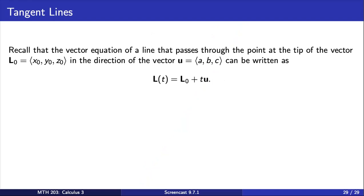Just as we found tangent lines in single-variable calculus, we can do the same for vector-valued functions. Recall that the vector equation of a line that passes through the point L0 in the direction of the vector u can be written as a function L of t that we have here.